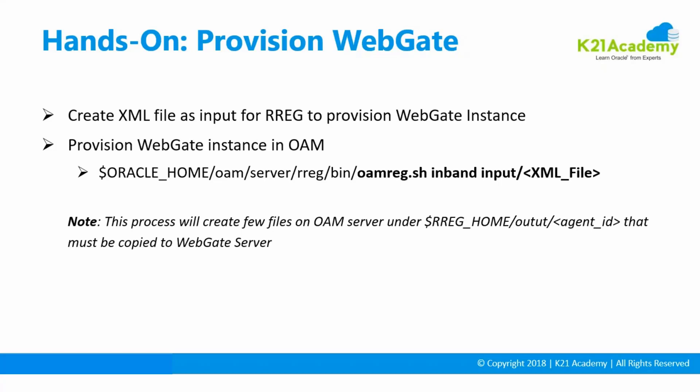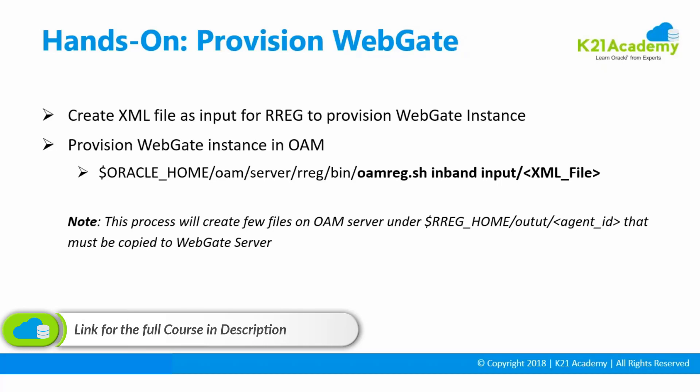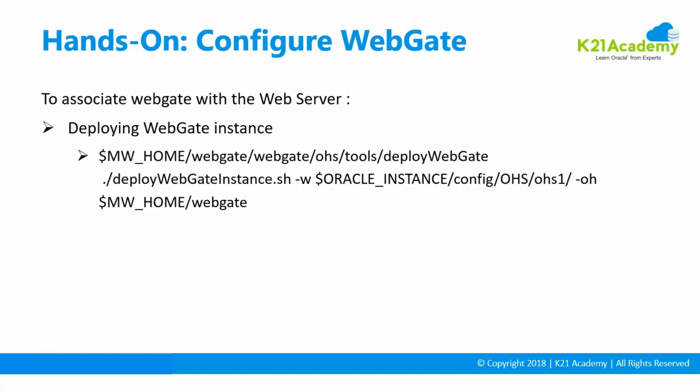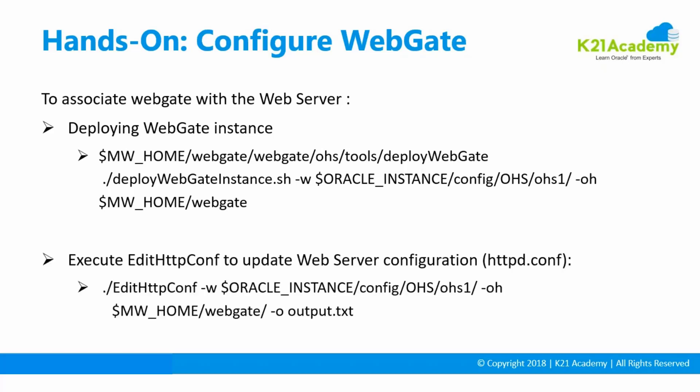If you're creating a WebGate from the OAM console or updating it from the OAM console, it's going to create the artifact into a different directory under the domain home. It will create a folder called 'output', and in that output folder a subfolder called 'WebGateAgent', and in that it generates the artifacts. Then we finally configure or associate this WebGate installed on the web server by running the deploy WebGate instance command, which will talk to the WebGate on the OAM server.